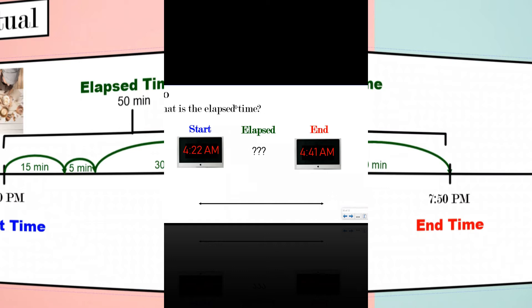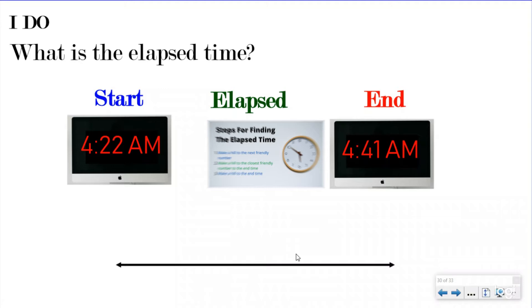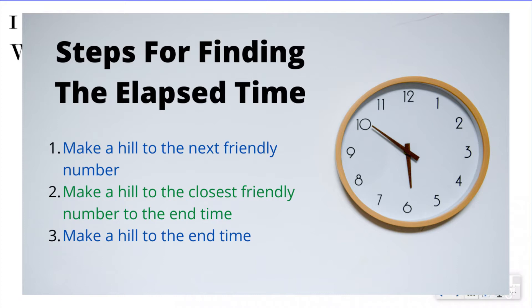Let's take a look at a question you might see when finding elapsed time. Instead of level one, two, three format, we're doing an I do, We do, and You do. Our first I do says: what is the elapsed time? It gives us a start time of 4:22 AM — maybe this is when you woke up in the middle of the night because you're having a bad dream — and an end time of 4:41 when you went back to sleep. We're going to use our number line to solve this.